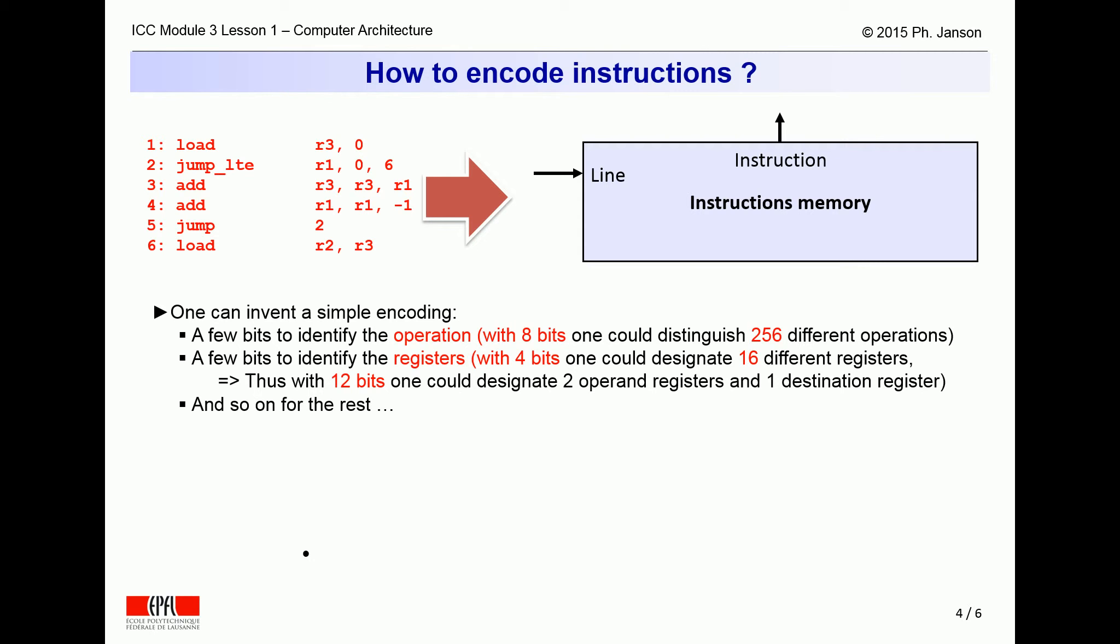Similarly, 4 bits are sufficient to denote one among 16 different registers. Since the largest instructions refer to two operand registers and one result register, this requires 3 times 4 bits, or 12 bits.